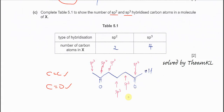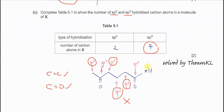So for compound X: the CH3 group is sp3, the first CH2 is sp3, the second CH2 is sp3, and another CH2 is sp3 — giving a total of 4 sp3 carbons. It has two carbonyl groups, so those two carbons are both sp2, giving 2 sp2 carbons in total.